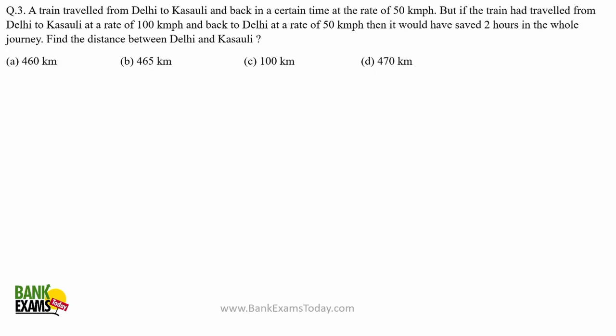Let's move on to the next question. A train traveled from Delhi to Kosoly and back in a certain time at a rate of 50 kilometers per hour. If the train had traveled from Delhi to Kosoly at 100 kilometers per hour and back at 50 kilometers per hour, it would have saved two hours of the whole journey. Find the distance between Delhi and Kosoly. According to the statement, the train starts from Delhi, goes to Kosoly, and then moves back to Delhi again.